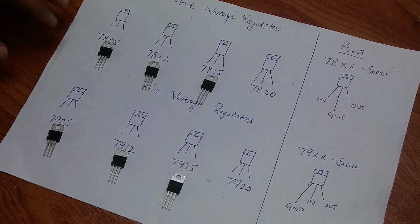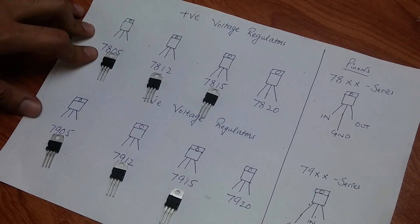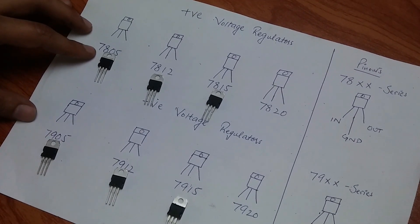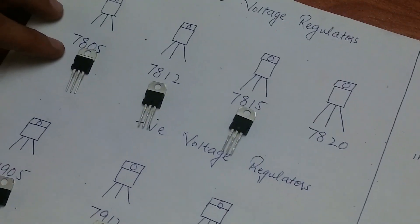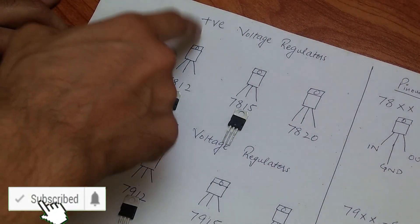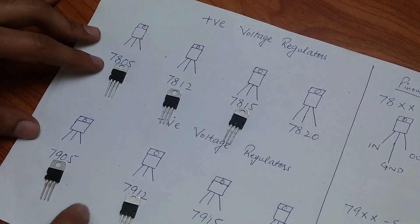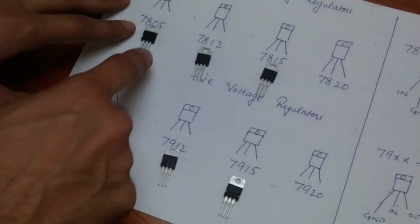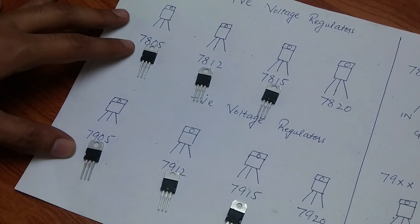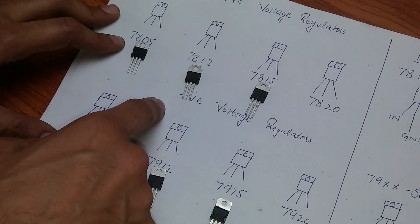I'll tell you what regulators are used. First, this is the 7805 voltage regulator — it produces an output of 5 volts. If it is a positive series, it produces positive voltage, and if it is a negative series, it produces negative voltage. Just like 7805, the 7905 regulator produces negative 5 volts.